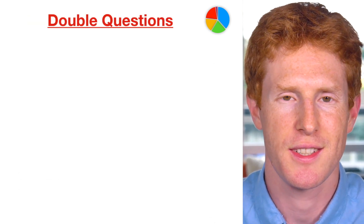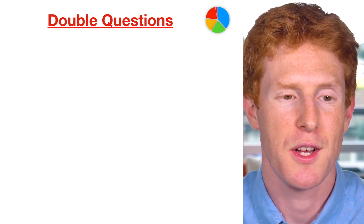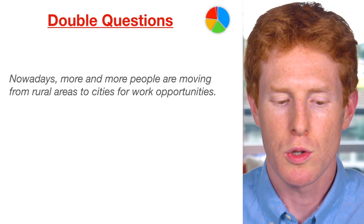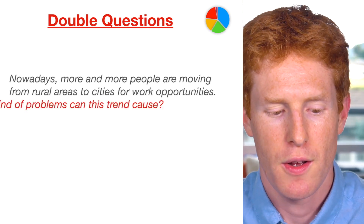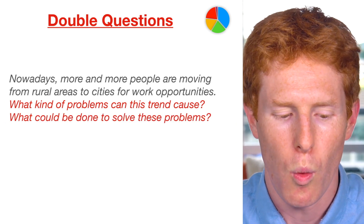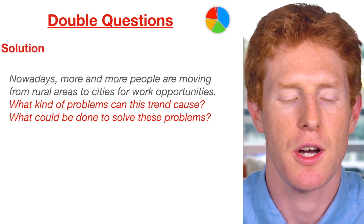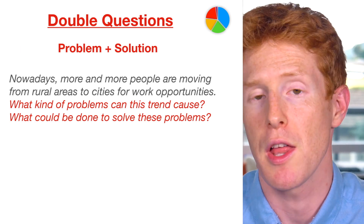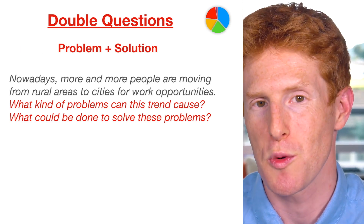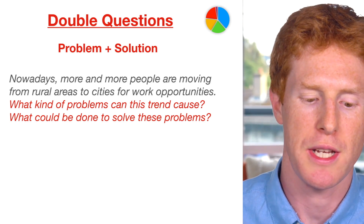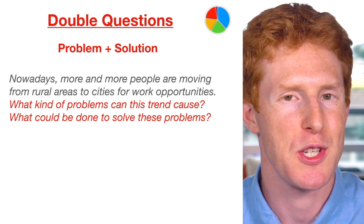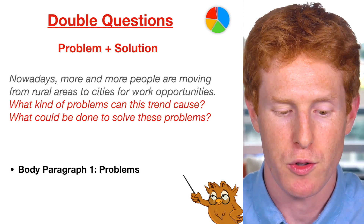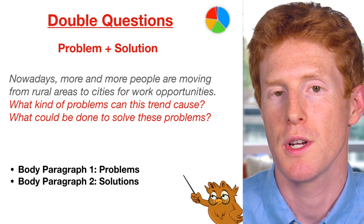Next we have double questions — by far the most complex and difficult to answer in 40 minutes. Here's an example: 'Nowadays more and more people are moving from rural areas to cities for work opportunities. What kind of problems can this trend cause? What could be done to solve these problems?' This is a problem and solution question — two separate questions. The first asks us to identify the problems (more than one), and the second asks for solutions ideally connected to those problems. Body paragraph one identifies the problems and body paragraph two identifies the solutions.